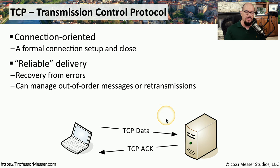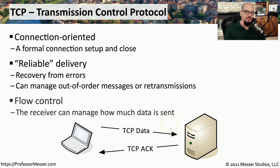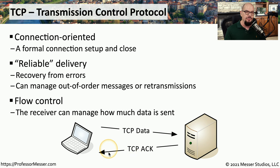We also add sequence numbers inside of these TCP headers. So if TCP packets get out of order as they're sent across the network, we can put them in the right order on the other side. Or if we're missing a particular packet, we can request just that packet to be retransmitted. This also means the receiver can manage traffic flow by sending back specific acknowledgment frames that tell the source device to either send more information or to slow down.